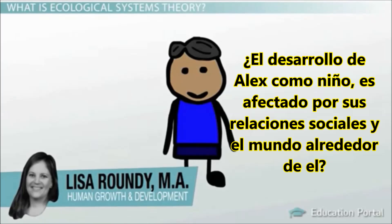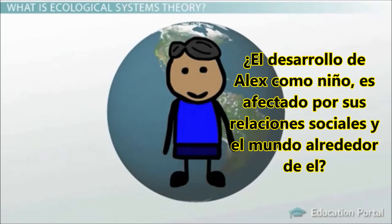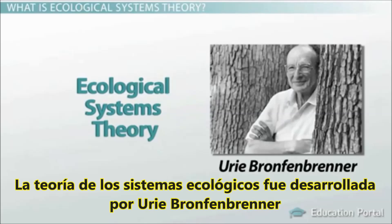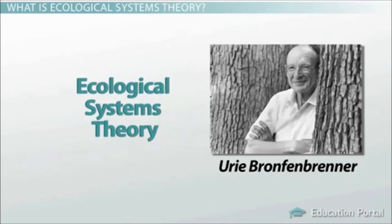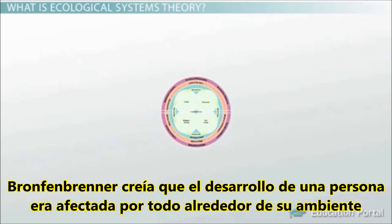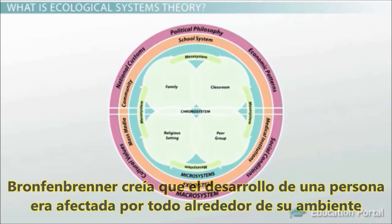How is a child's development affected by their social relationships and the world around them? Ecological Systems Theory provides one approach to answering this question. The Ecological Systems Theory was developed by Uri Bronfenbrenner, who believed that a person's development was affected by everything in their surrounding environment.